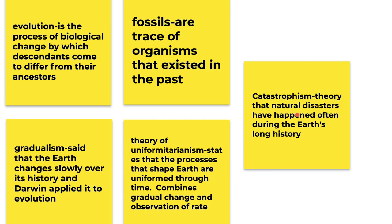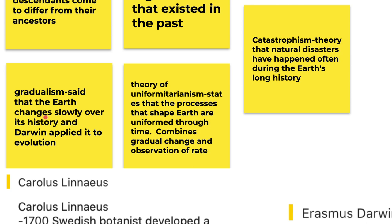Catastrophism is the theory that natural disasters have happened often during Earth's long history. Gradualism said that the Earth changes slowly over its history, and Darwin applied it to evolution.